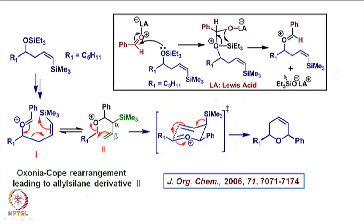Also, of course, we will be releasing the triethylsiloxy anion. Now this particular oxonium ion having a vinylsilane undergoes what is called the oxonia-Cope rearrangement, leading to this kind of allylsilane derivative.